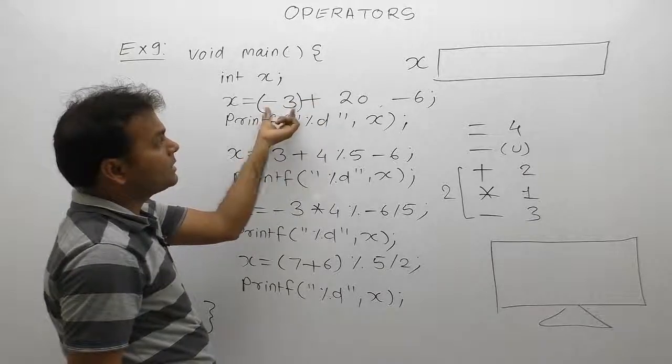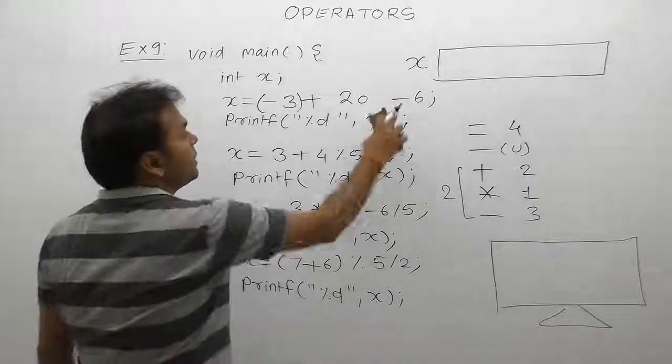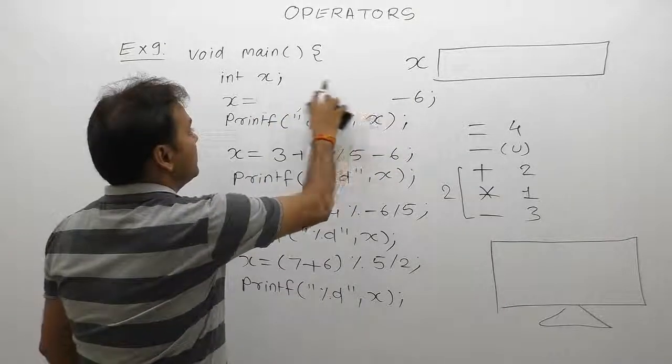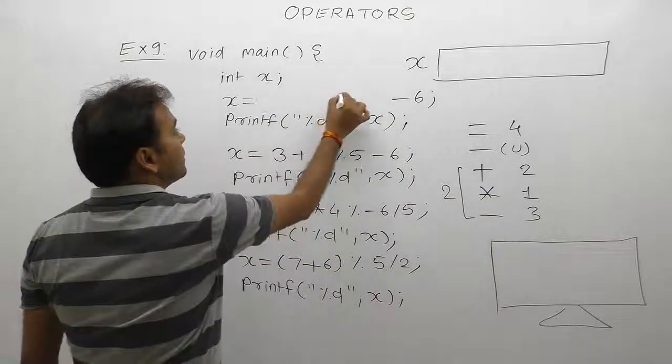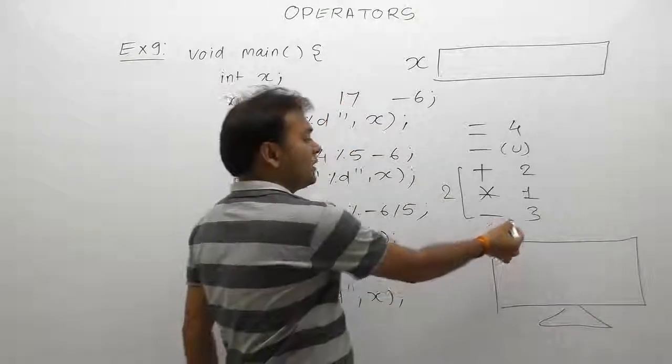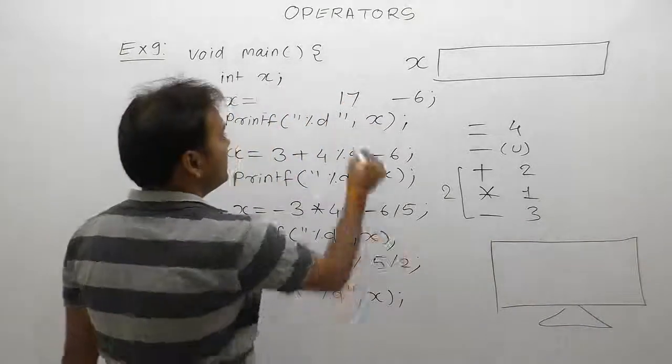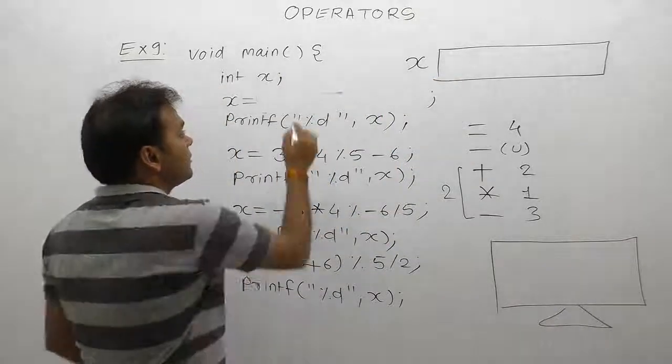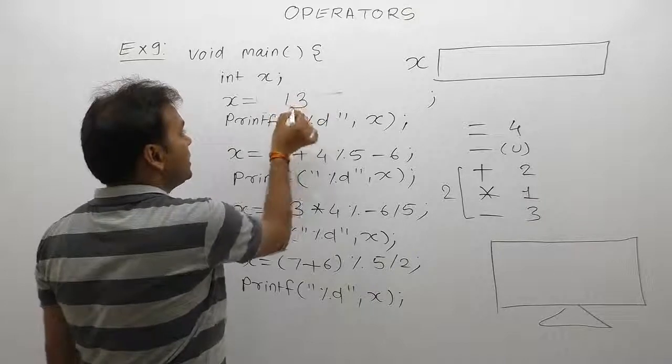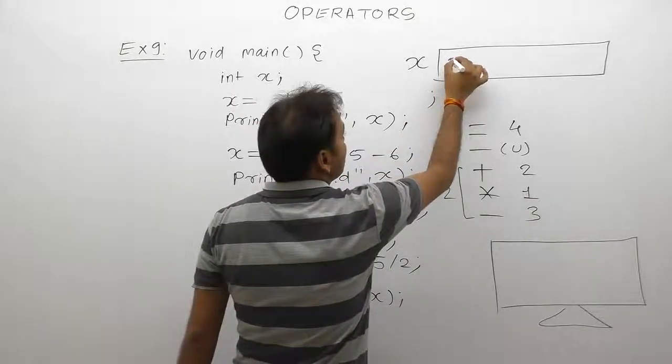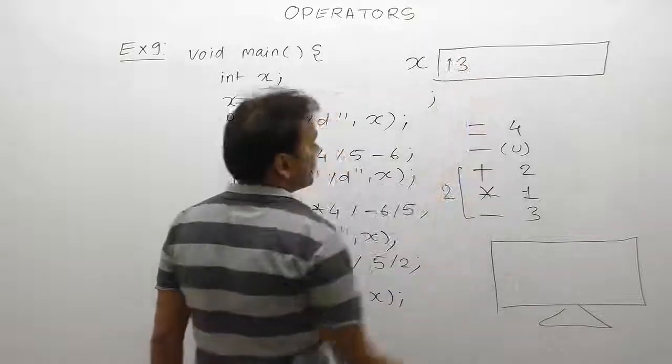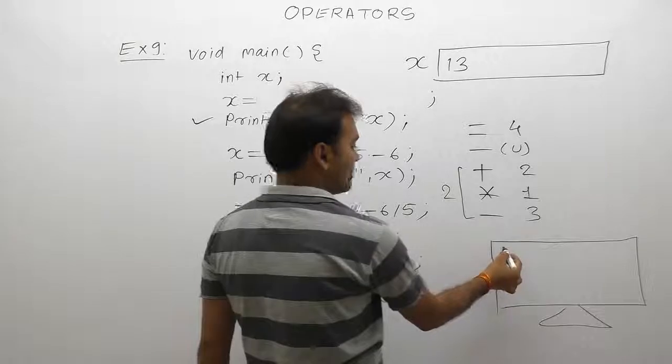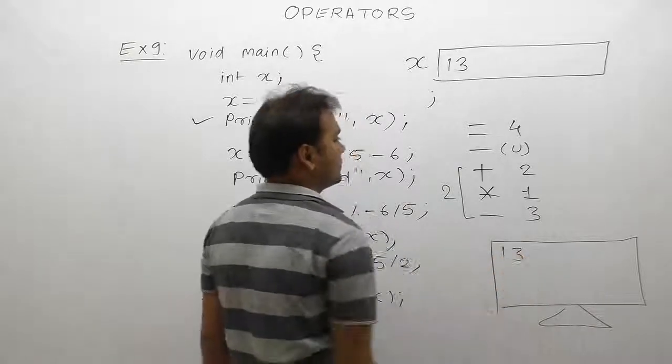20 plus minus 3 is 17. Then third case, priority is minus: 17 minus 6, result is 13. Now 13 is assigned to the variable x. X becomes 13, then what is the printed value of x? Also 13. This is the first case.